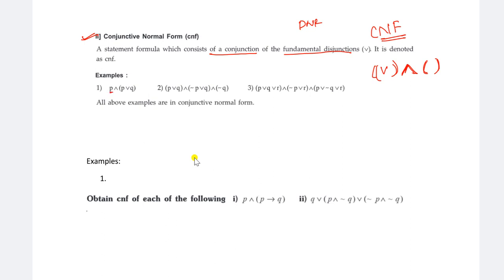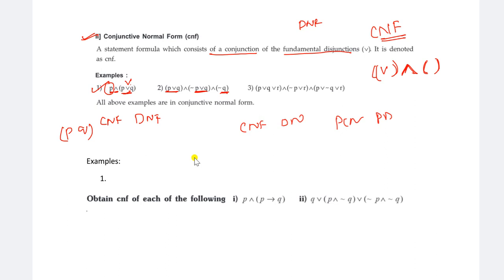For DNF, which consists of disjunctions of fundamental conjunctions. For CNF, which consists of the statement formula consisting of conjunction of the fundamental disjunction - that means within the brackets OR symbol should be there, and outside the brackets AND symbol should be there. That is CNF - Conjunctive Normal Forms. A single terminal is not an issue for CNF or DNF. The difference between CNF, DNF and PCNF, PDNF is that in PCNF, min terms and max terms appear, meaning within the brackets all statements must be present.